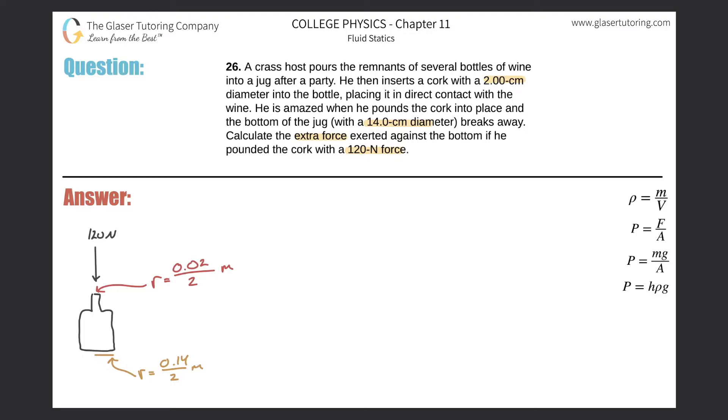At the top they told us the diameter is two centimeters. I converted it into meters and then since it was the diameter I had to divide by two to find the radius. I did the same thing on the bottom, converted the 14 centimeters into meters by moving the decimal two places to the left and then dividing by two to find the radius. I also drew in here this little force vector of 120 newtons acting on the cork pointing down.